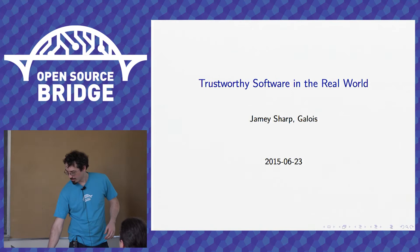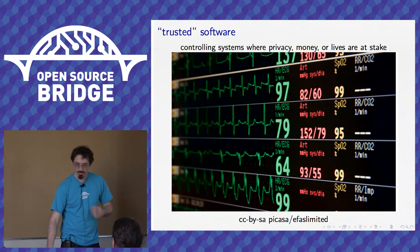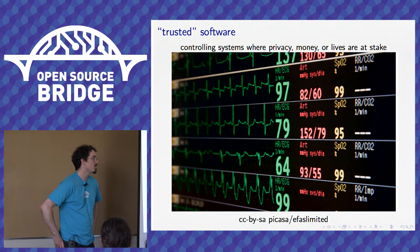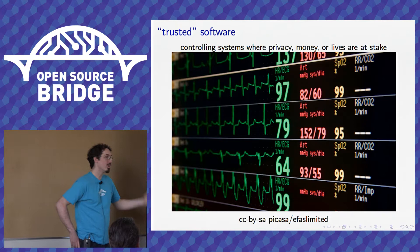I work for Galois. Our mission is to engineer trustworthiness in critical systems. I'm going to talk a little bit first about what trustworthiness means. But to explain that, I have to talk about this notion of trust — that we have software that we are implicitly trusting, like in an ECG monitor in a hospital, where the software is controlling systems where privacy or money or lives or something important is at stake.